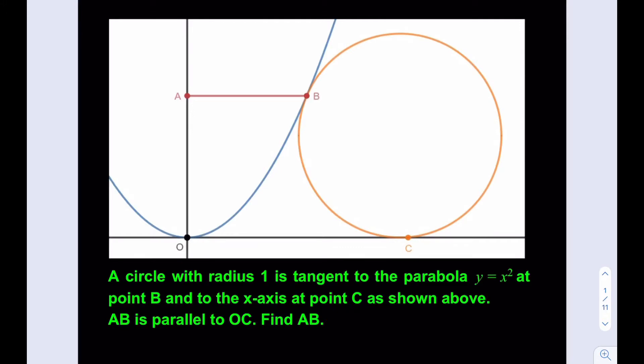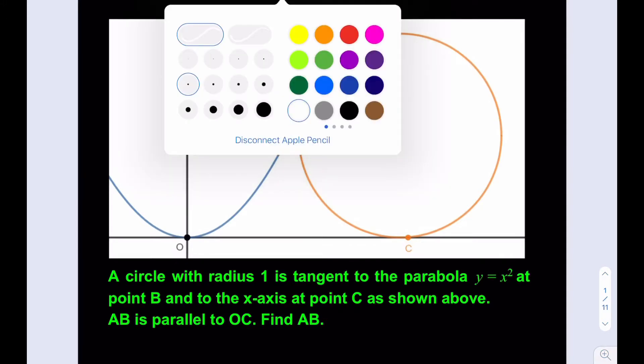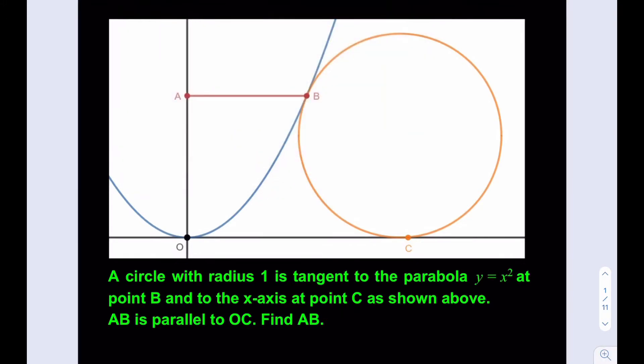We're going to go ahead and make some equations here. First, let's write the equation for the circle. I'm going to start by marking the center. This is the point of tangency, so that's going to be a perpendicular segment here. Let's say D is the center of the circle.